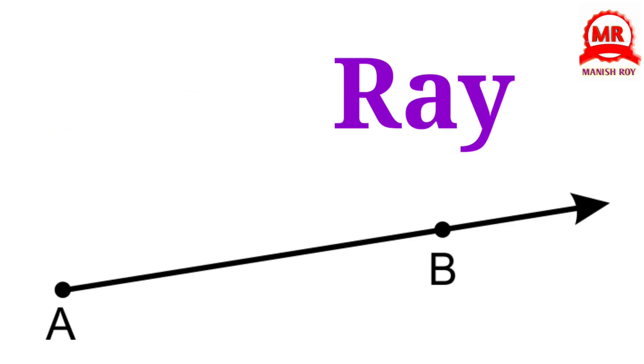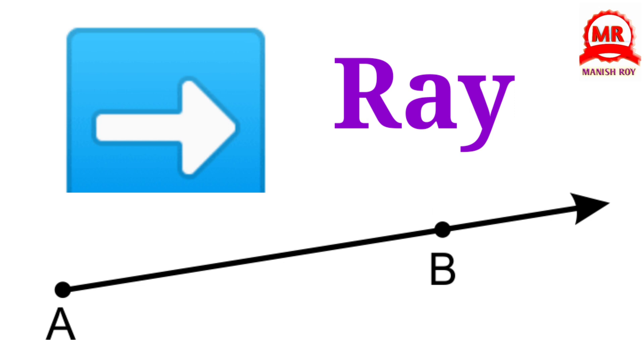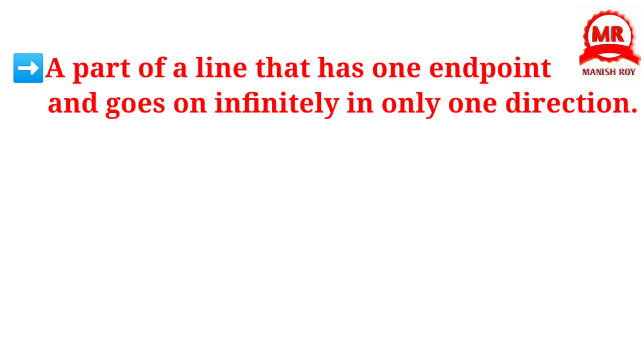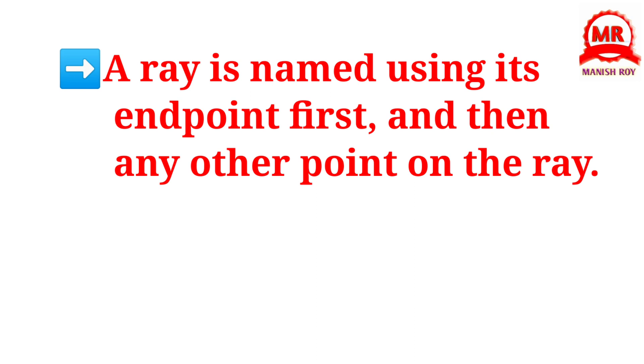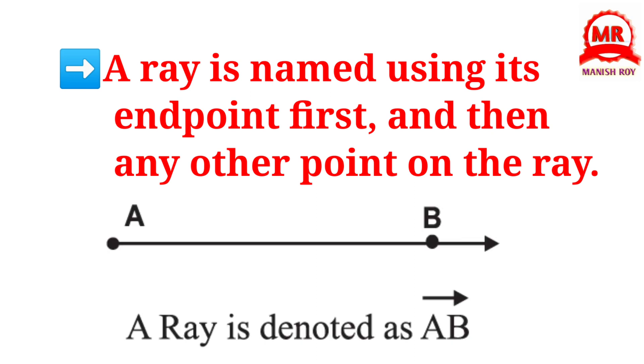Ray. A part of a line that has one endpoint and goes on infinitely in only one direction. A ray is named using its endpoint first and then any other point on the ray.